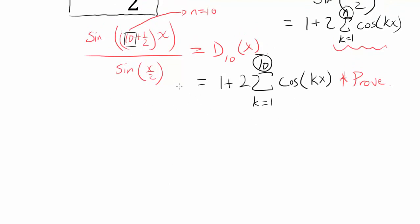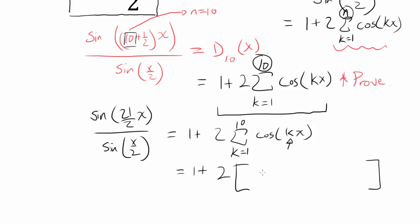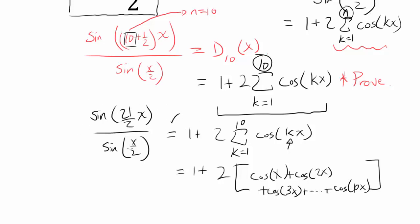Now let's prove that sine of (21/2)x over sine of x/2 equals 1 plus 2 times summation from k equals 1 to 10 of cosine of kx. This expression means 1 plus 2 times the sum of cosine x, cosine 2x, cosine 3x, all the way to cosine 10x. These two expressions should be equal — let me show you how.